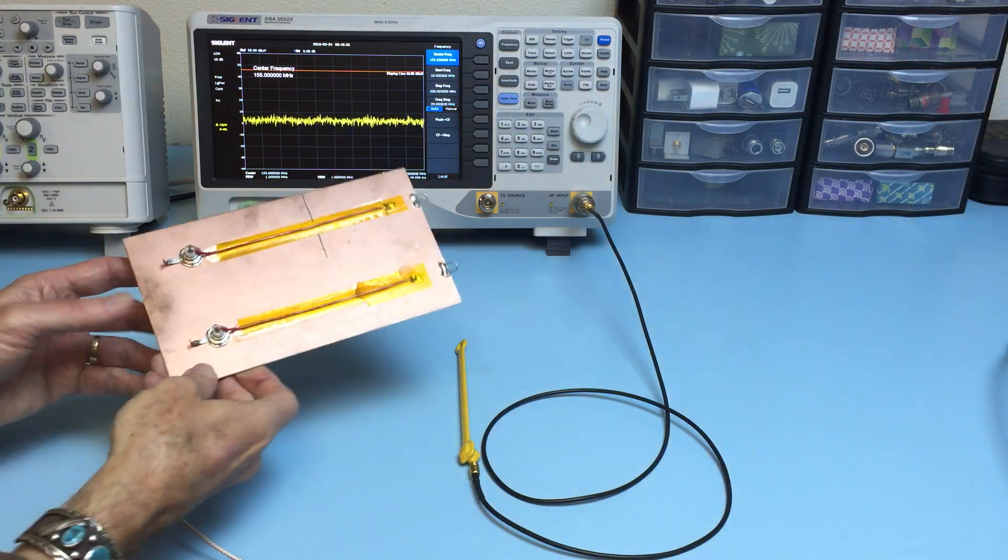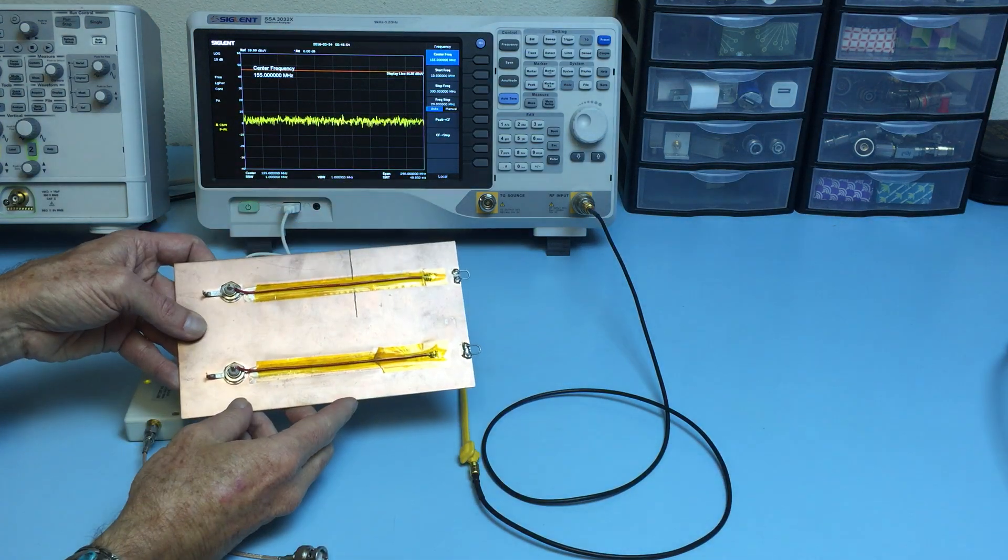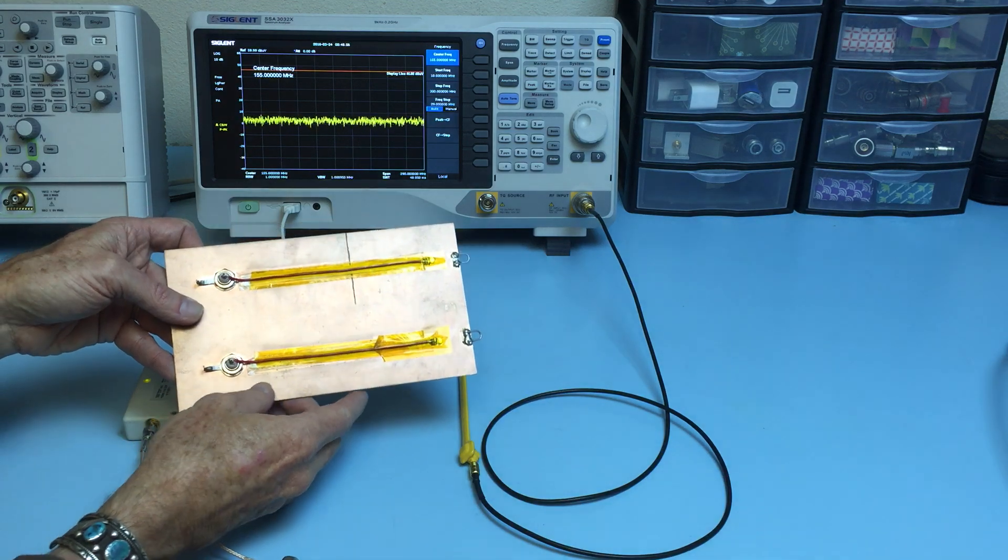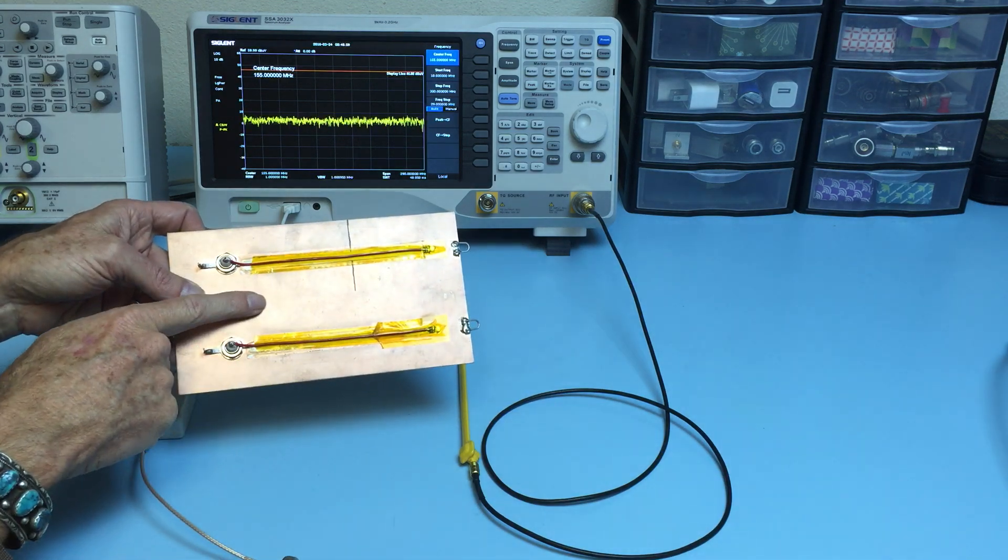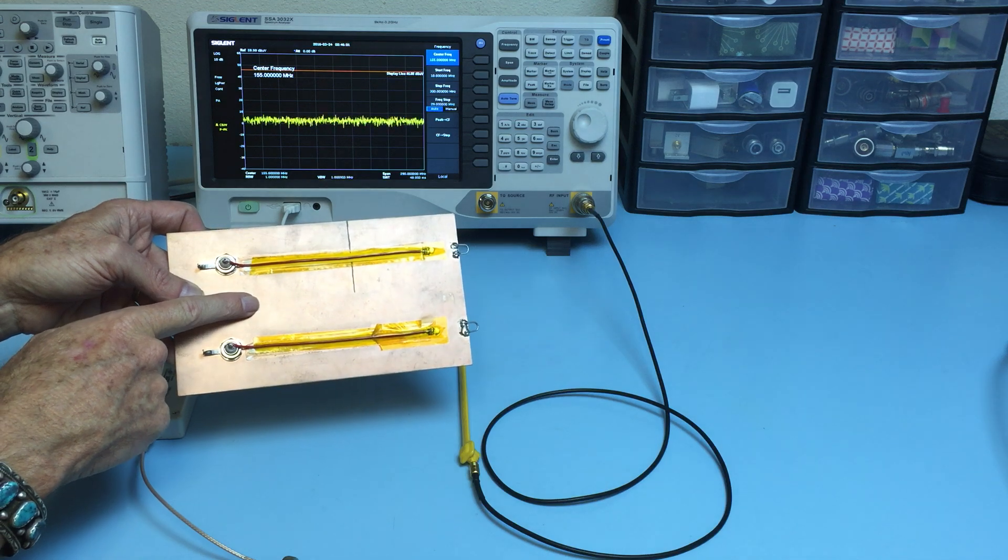I'd like to demonstrate why gaps in return planes are bad news for radiated emissions. We'll be using this circuit board to simulate the effect.